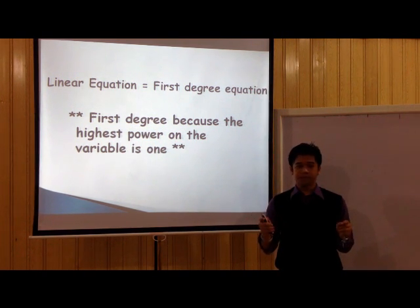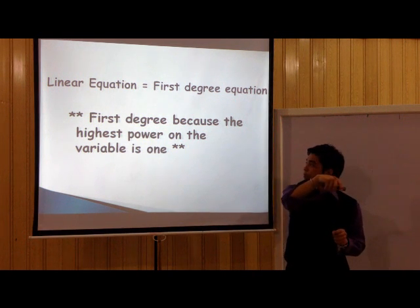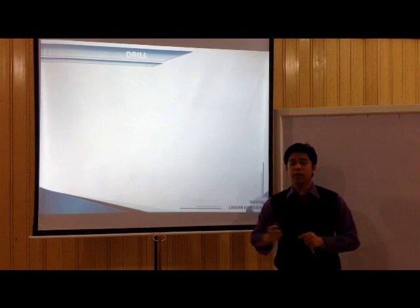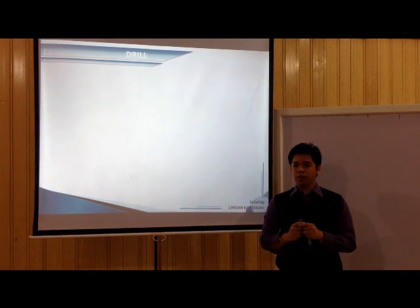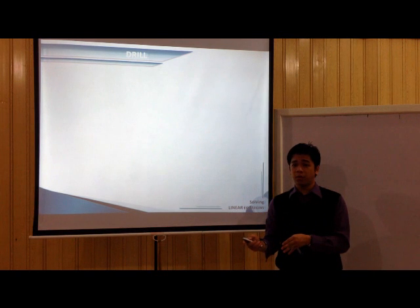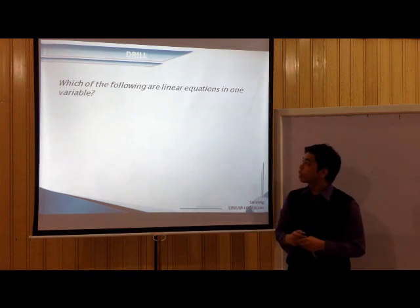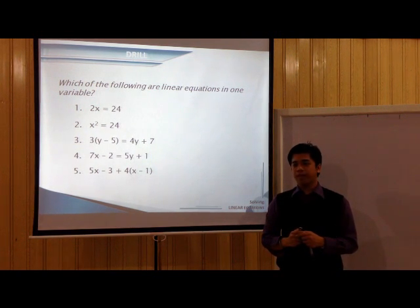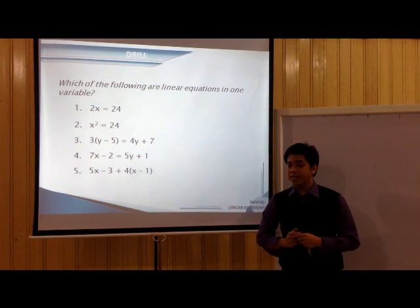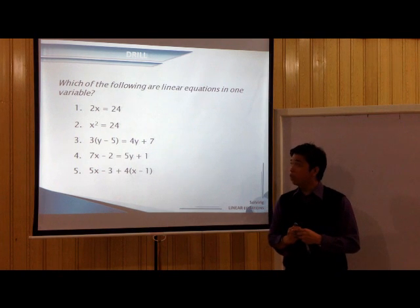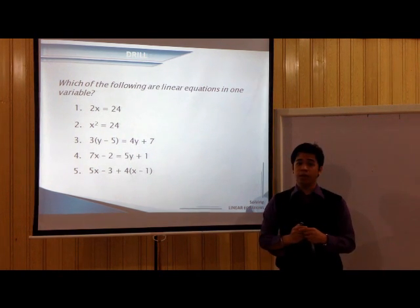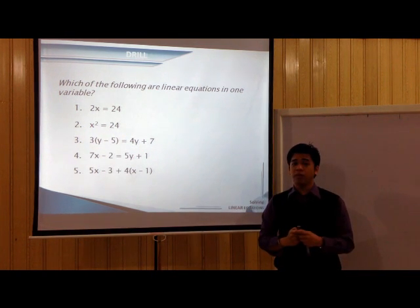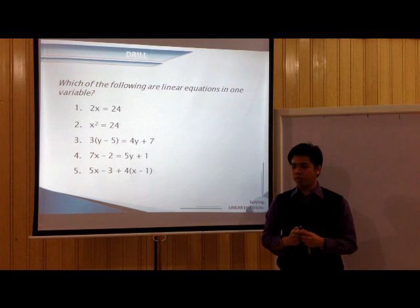Is that clear? Thank you. Now, before we go to our lesson, let us first have a short review on how to determine whether an equation is a linear equation in one variable or not. Number 1: 2X equals 24. Is that a first degree equation? Yes, it is. Do you see one variable? Yes, we see one variable, and that is X. Therefore, can we consider that a linear equation in one variable? Yes, it is a linear equation in one variable.